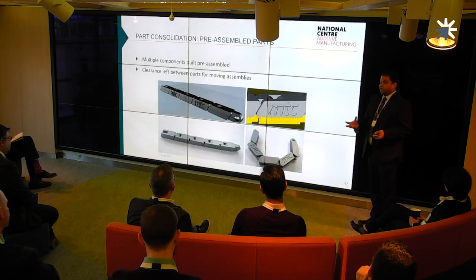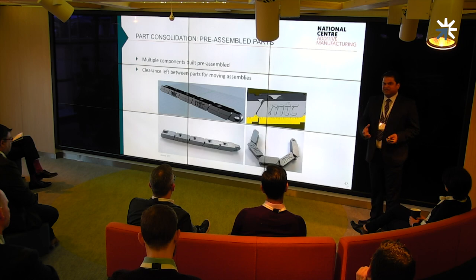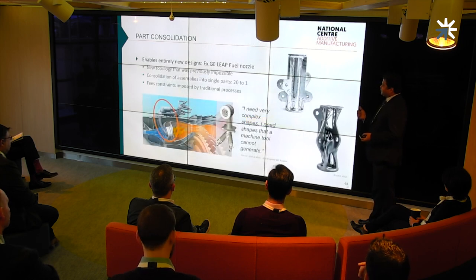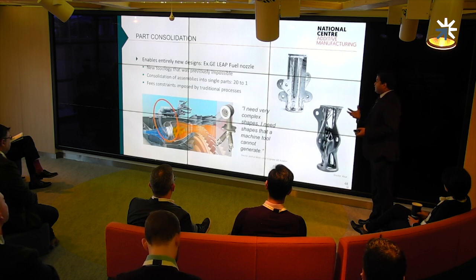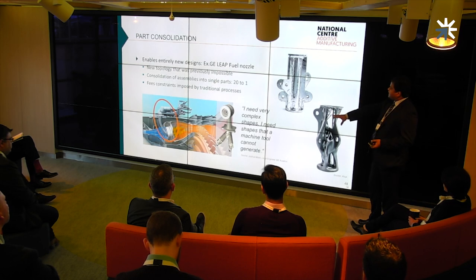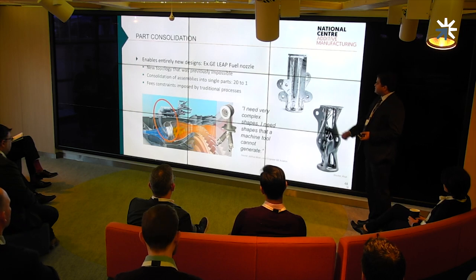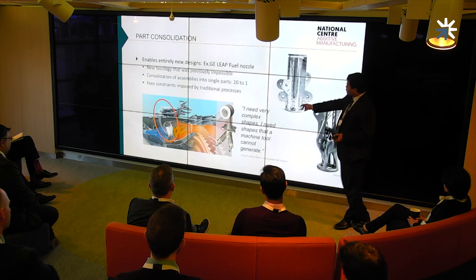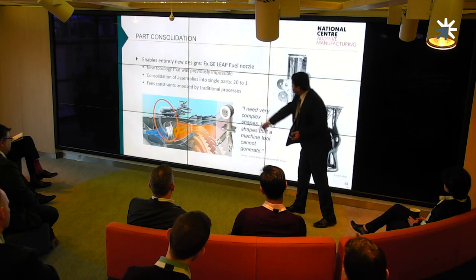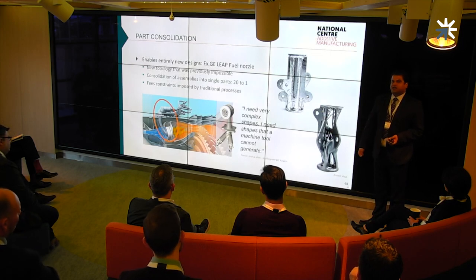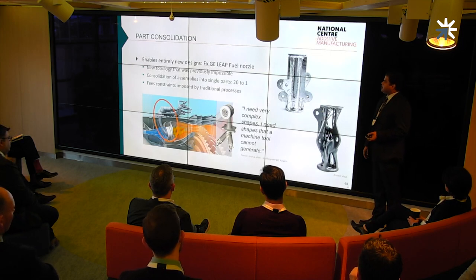Some people call it 4D printing — the part is assembled in-process. This is the GE fuel nozzle system, the leader in the market. It had 16 or more parts that used to be assembled together, but now it's made in one piece. It's the first part that went into production with GE and it's a critical part. That's the impact of part consolidation.